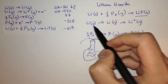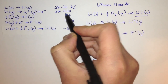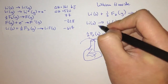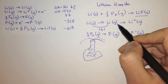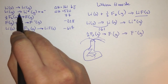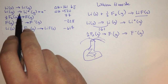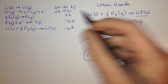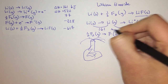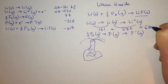Lithium has to go from a solid to a gas, and to do that we have to give it 161 kilojoules. Then from lithium gas, we take away one of its electrons — that is 520 kilojoules. Adding these up, the heat of formation of gaseous lithium ion is 681 kilojoules.